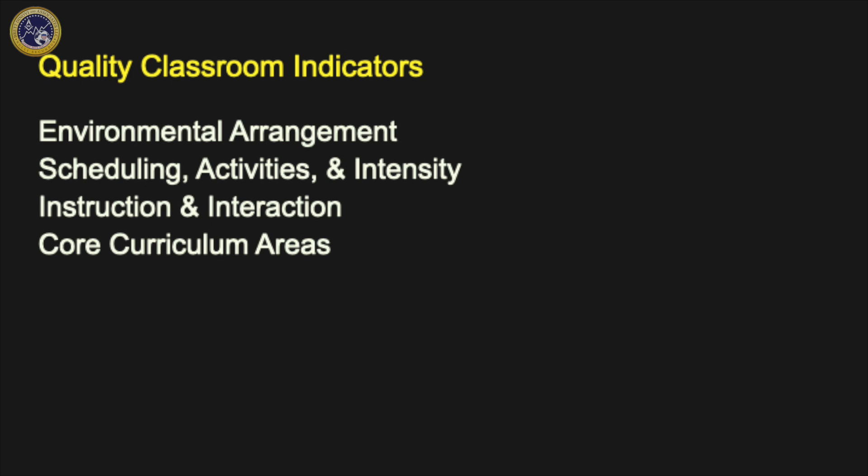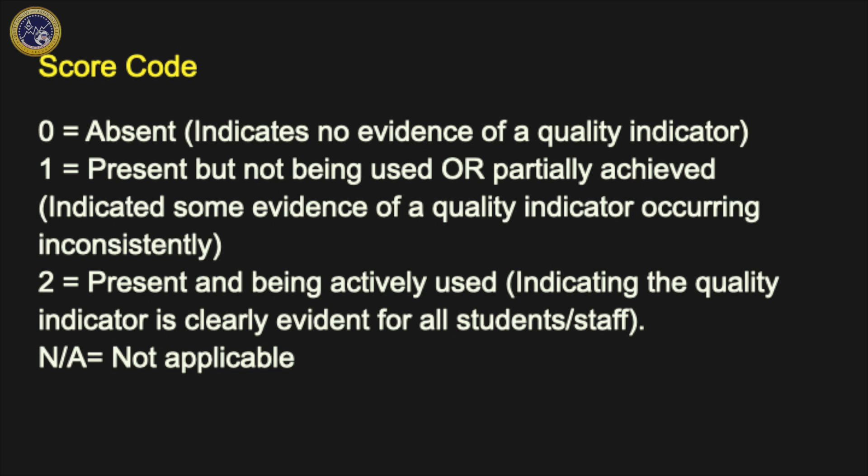There are four quality classroom indicators: environmental arrangement, schedules, activities, and intensity, instruction and interaction, and core curriculum areas. The score code is as follows: a zero indicates there's no evidence of the quality indicator; a one indicates that it's present and partially achieved; two means that it's present and being actively used; and NA would mean that area was not applicable.